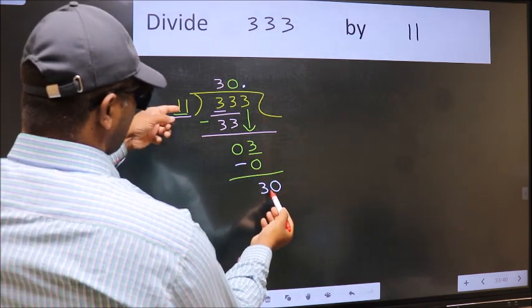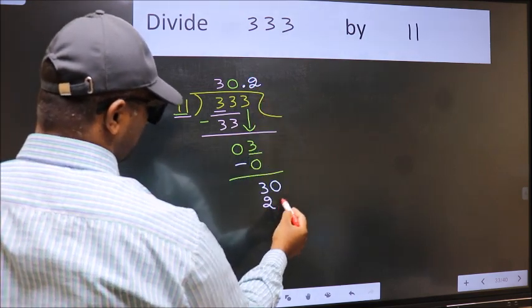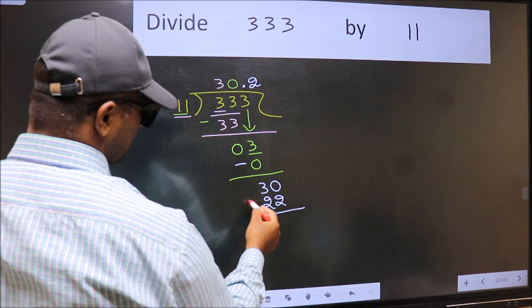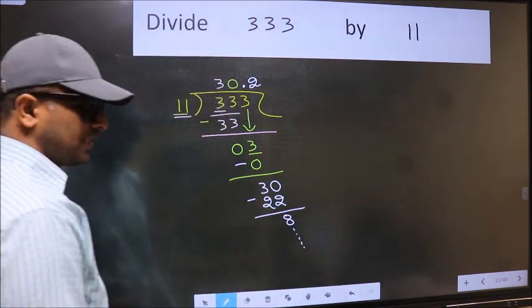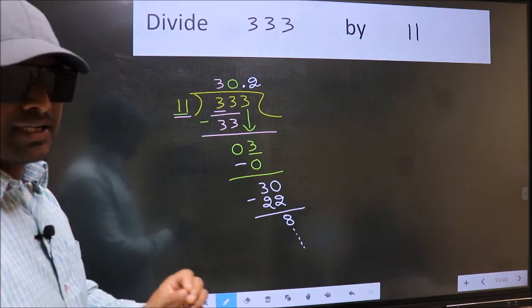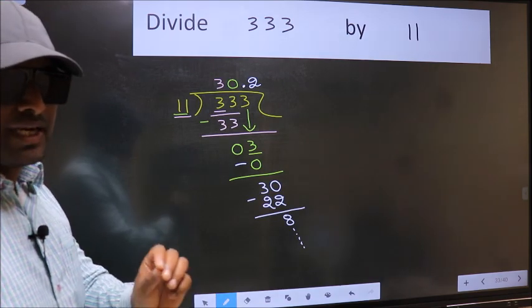A number close to 30 in the 11 table is 11 times 2, which is 22. Now subtract to get 8 and continue the division. I am not doing that. Did you understand where the mistake happens? You should not make that mistake.